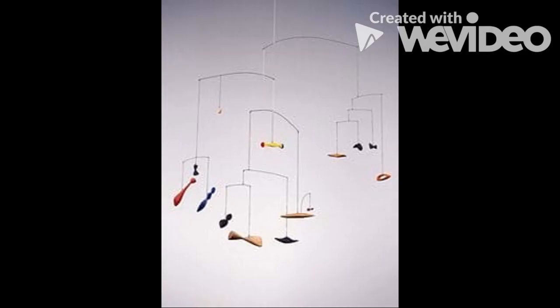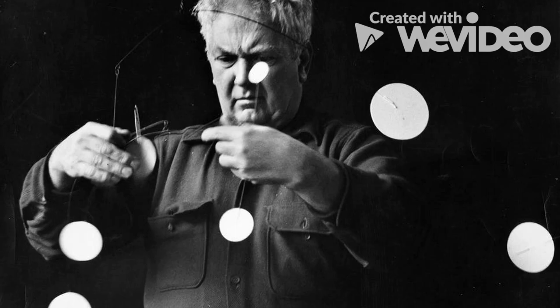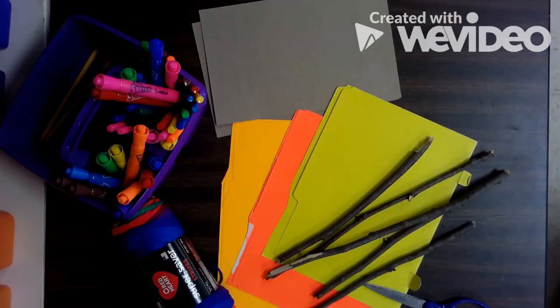This is known as kinetic art, which means art in motion. Alexander made his mobiles out of wire and steel, but we're going to stick to items that we can find around home.